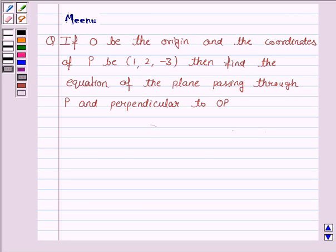Hello and welcome to the session. Let us discuss the following question. If O be the origin and the coordinates of P be (1, 2, -3), then find the equation of the plane passing through P and perpendicular to OP.